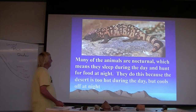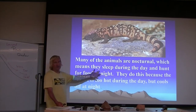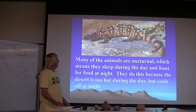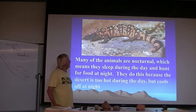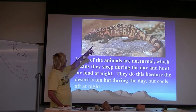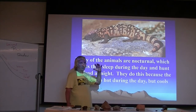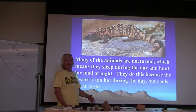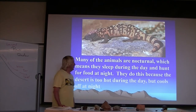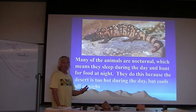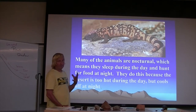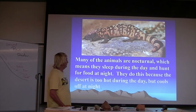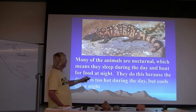Some desert species are nocturnal, sleeping during the day and coming out at night. The Gila monster is the only poisonous lizard in the western United States, yellow-orange and black in color. Yellow-and-black or red-and-black color combinations generally indicate a species is poisonous or has venom — bees are another example. The Gila monster has enough poison to kill a full-grown human being, and it is also a threatened species.